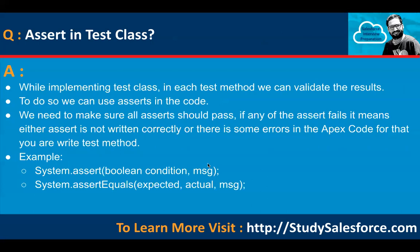Assert is also important in test classes. While implementing a test class, in each test method we can validate the result using assert. We need to make sure all asserts pass — if any assert fails it means either the assert is not written correctly or there is some error in the code. You can write System.assert with a boolean condition and a message, or assertEquals which receives expected and actual as parameters along with a message. If expected and actual match, the assert passes; if not, it fails.